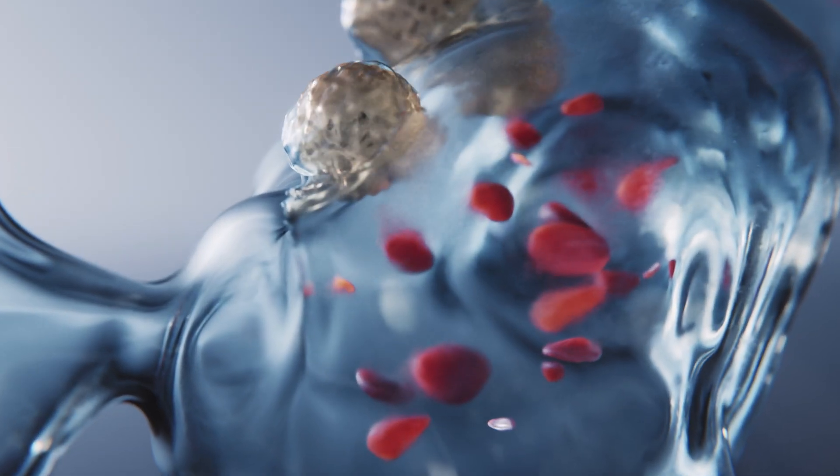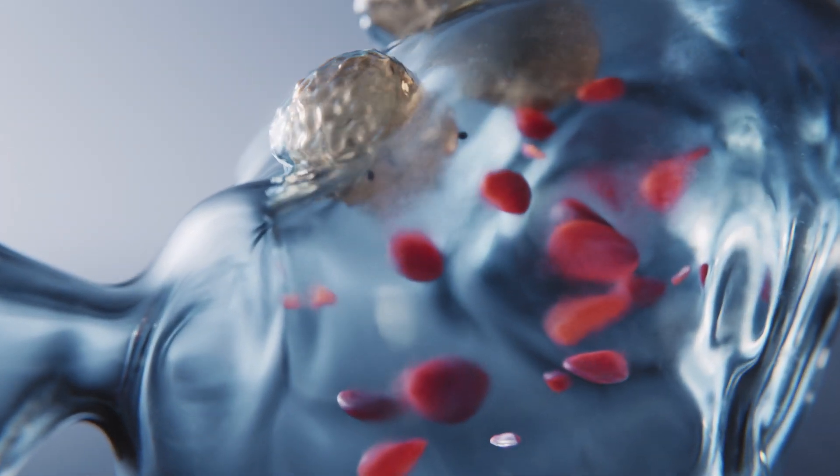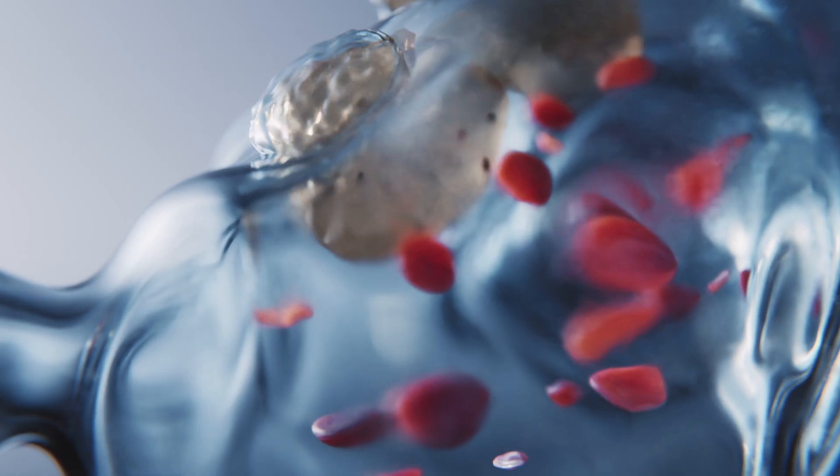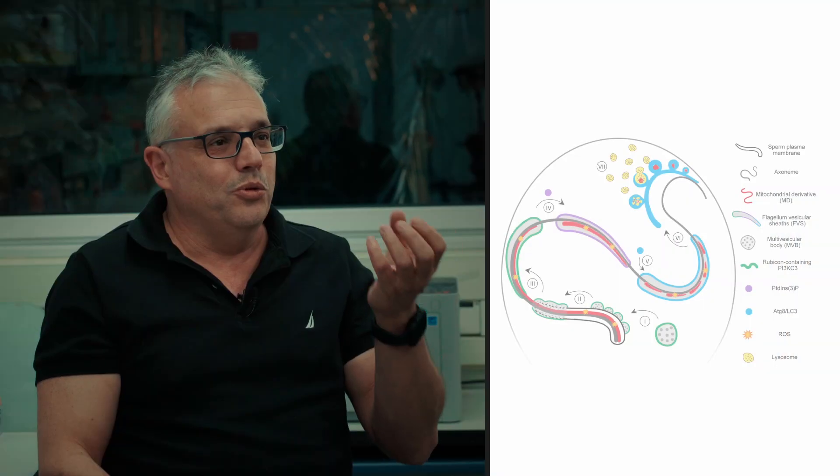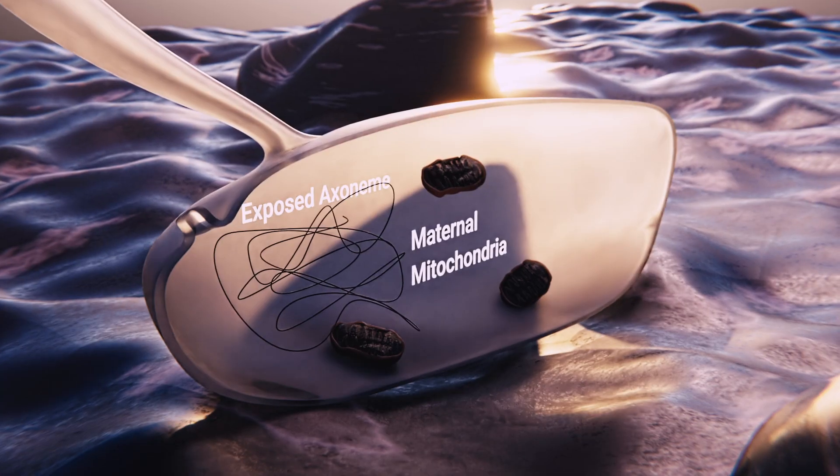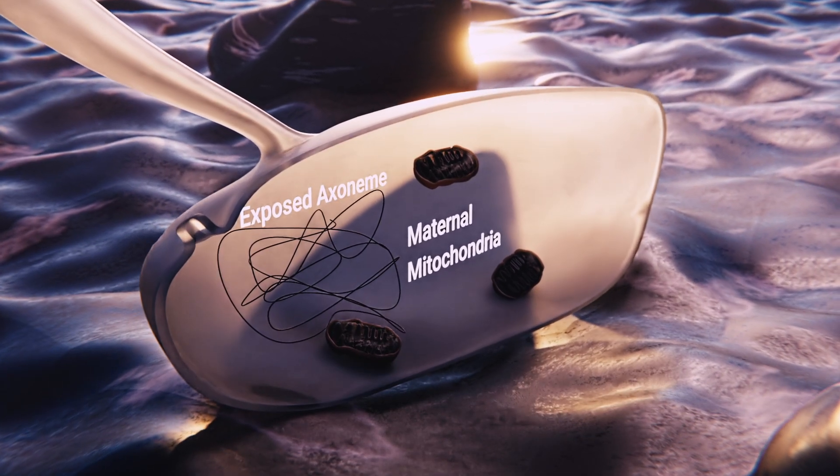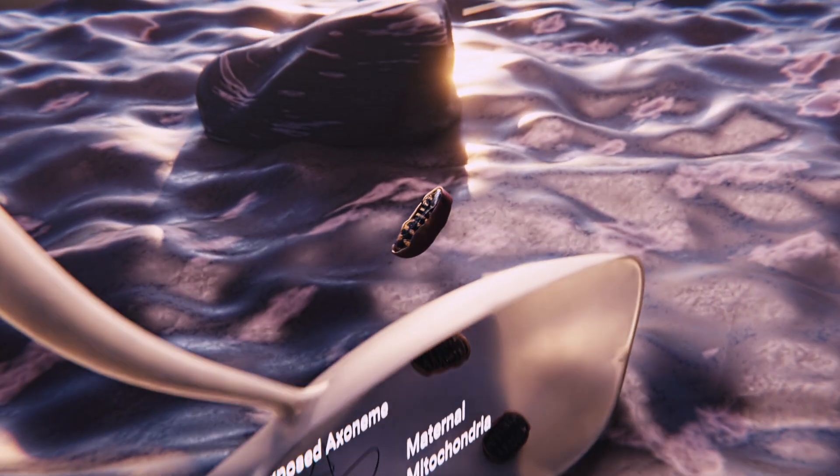The surprising discovery is that the egg utilizes such an aggressive mechanism to target the paternal mitochondria, which suggests that the egg perceives the paternal mitochondria as a dangerous trespasser. That's how the egg ensures that only maternal mitochondria remain.